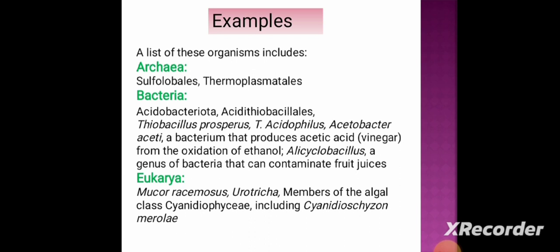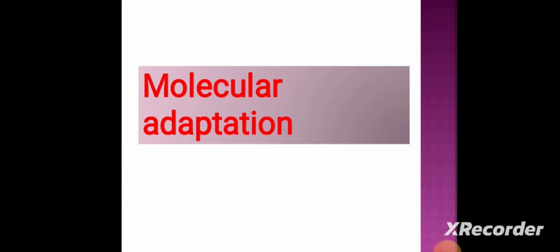Among the Eukarya, acidophile examples include Mucor, Urotricha, members of the algal class Cyanidiophyceae including Cyanidioschyzon merolae.